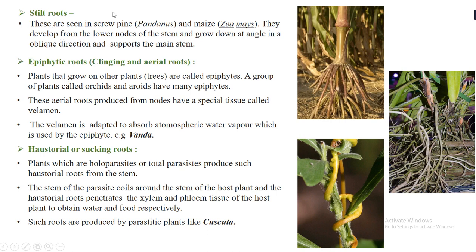Stilt roots are seen in Zea mays (maize). Because maize is a tall crop, it needs anchorage. Stilt roots develop from the lower nodes and, once they reach the soil, provide anchorage. Their main function is to provide support to the main stem so that it does not fall over.